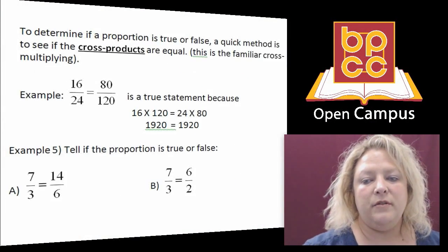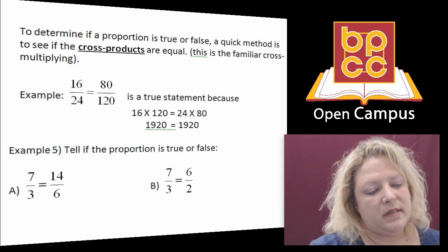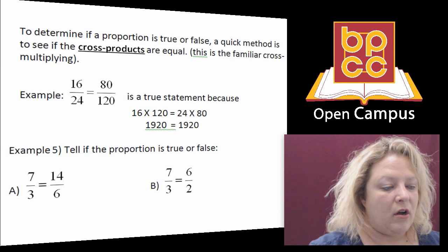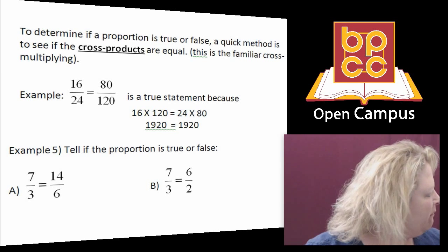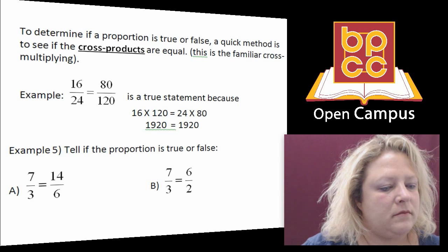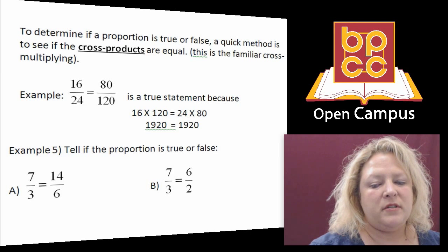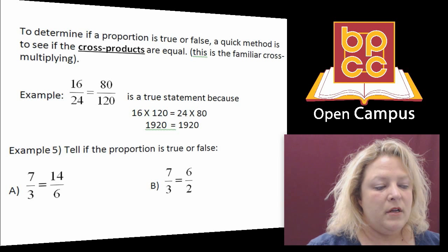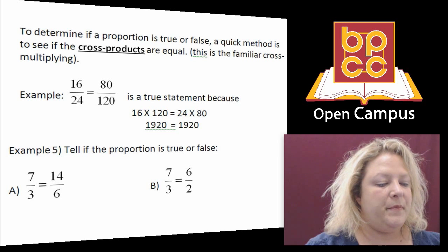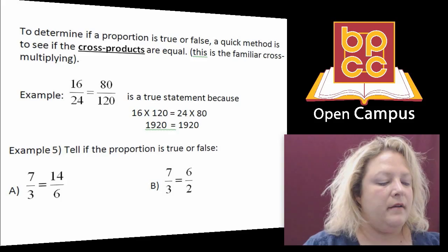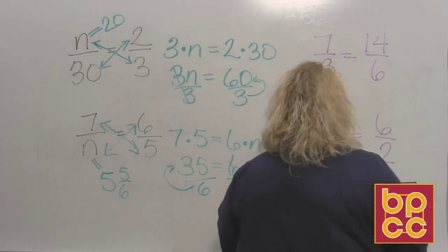Now let's go to the next topic dealing with proportions, and that is to tell if they're equal or not equal. The easiest way to do that is to do cross products. When you do your cross products and multiply, if they're equal, then the proportion is equal. If they're not equal, then the proportion is not equal. We're going to do these two examples and see if we have equivalent proportions or not.